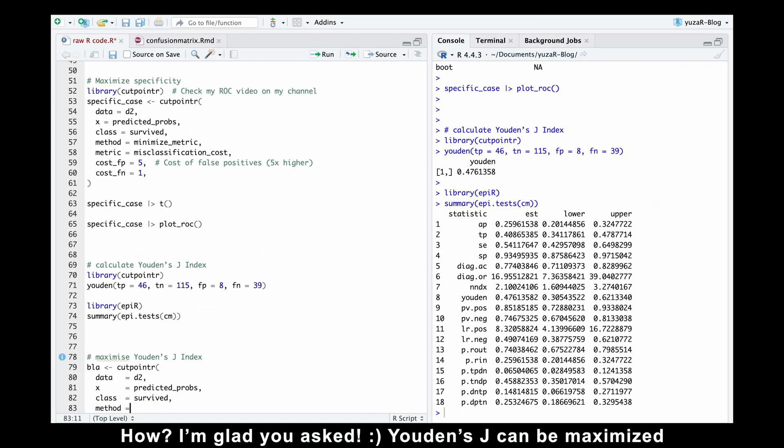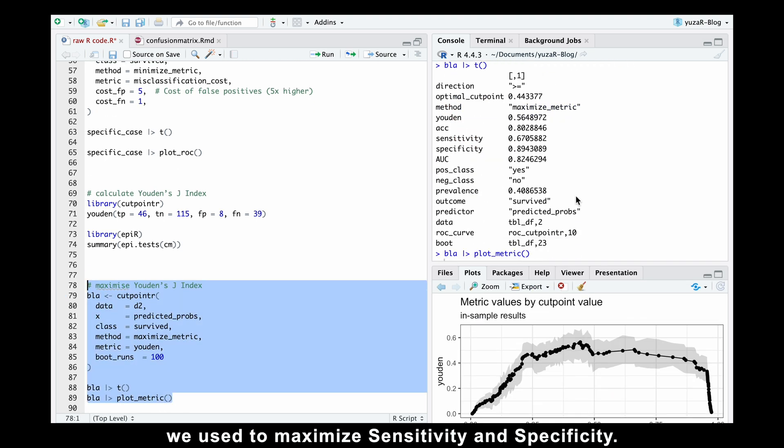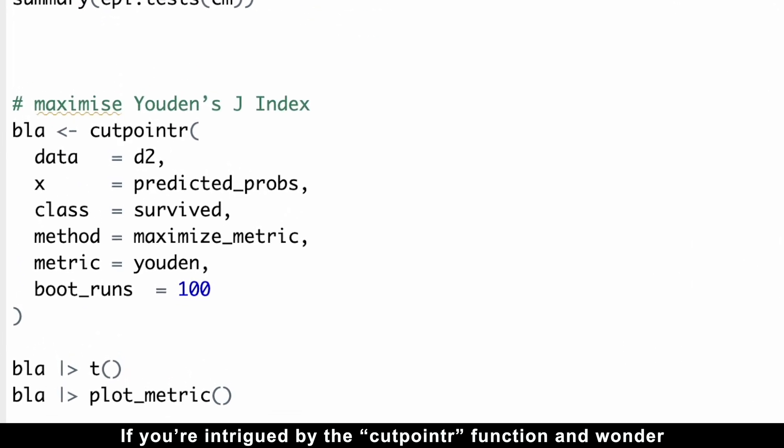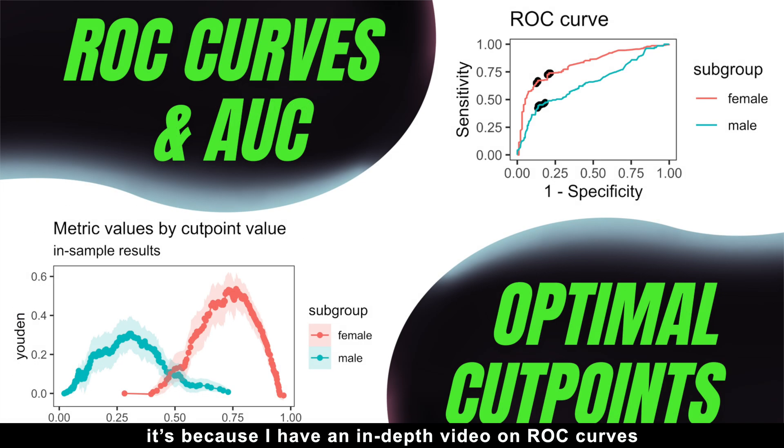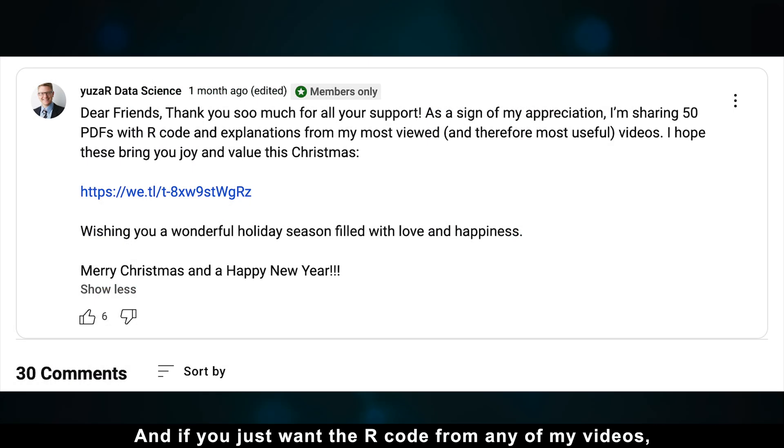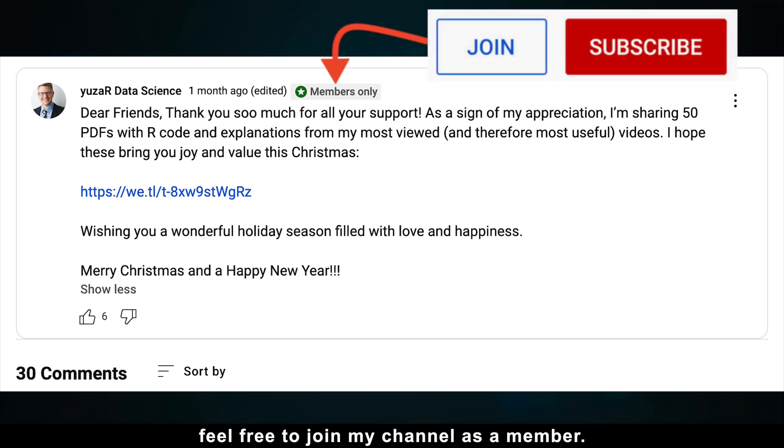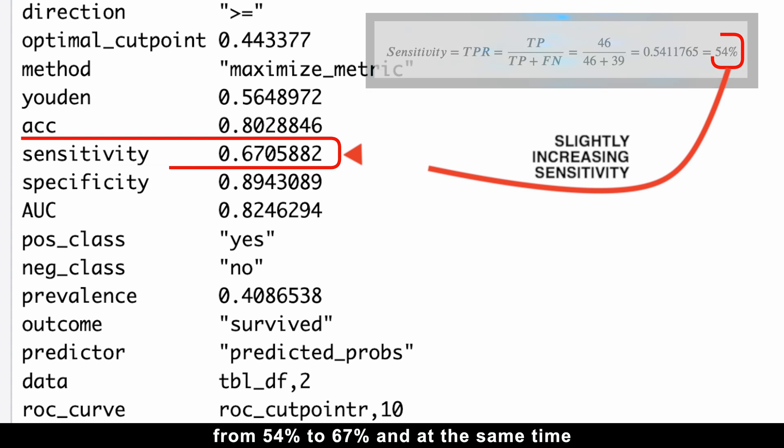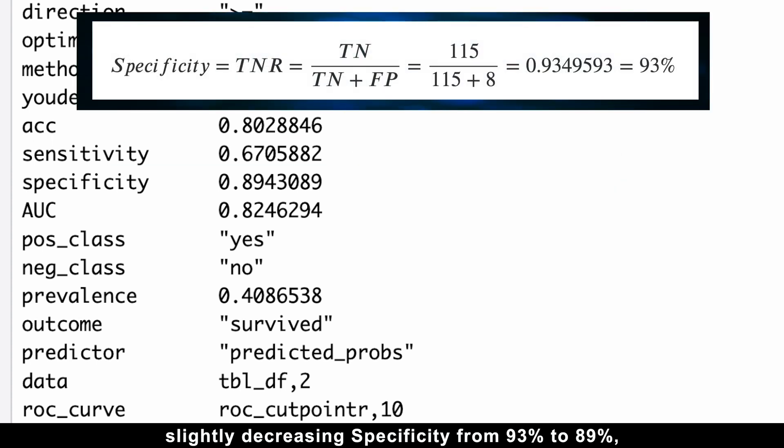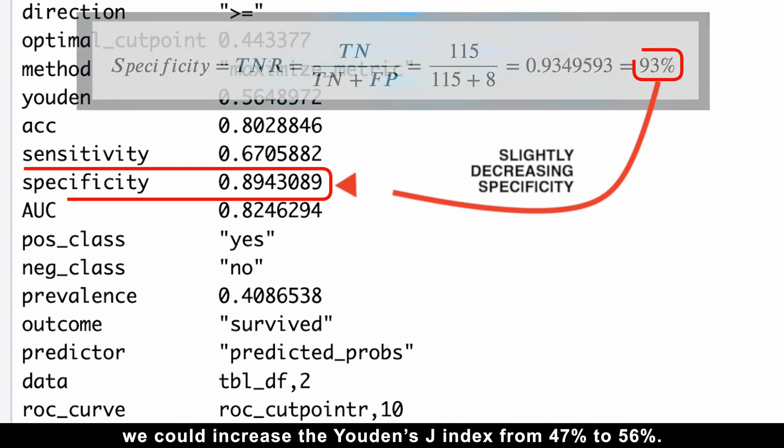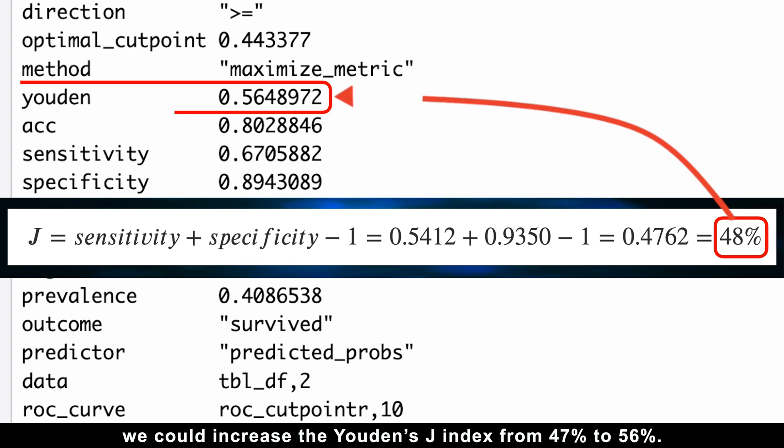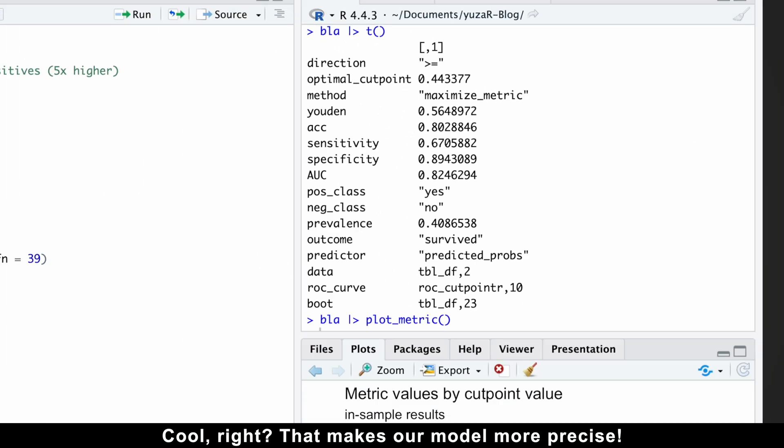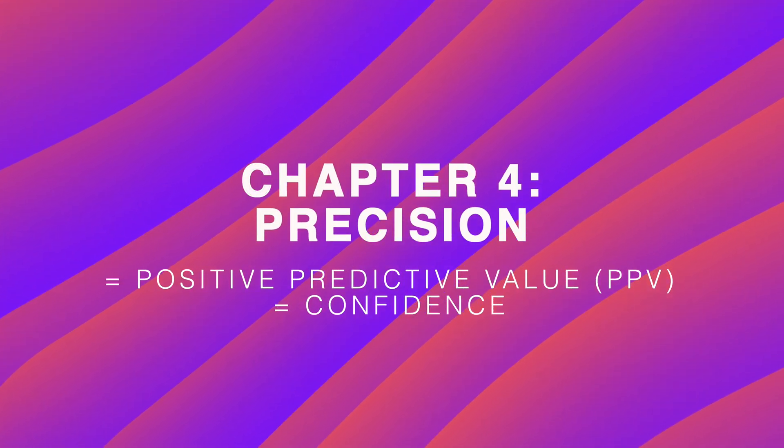Youden's J can be maximized using the same cutpointer function we use to maximize sensitivity and specificity. If you are intrigued by the cutpointer function and wonder why I haven't explained it in detail, it's because I have an in-depth video on ROC curves where I dive deep into the cutpointer function. Check it out if you haven't seen it yet. And if you just want the R code from any of my videos, feel free to join my channel as a member. Here, I just want to show you that by slightly increasing sensitivity from 54 to 67% and at the same time slightly decreasing specificity from 93 to 89%, we could increase the Youden's J index from 47 to 56%. Cool, right? That makes our model more precise. And speaking of precision, we need to discuss it next.